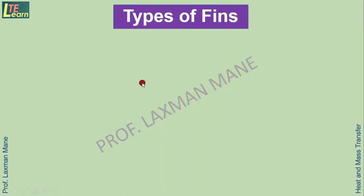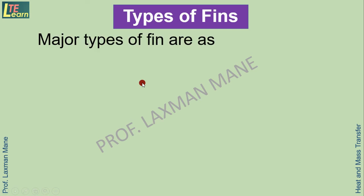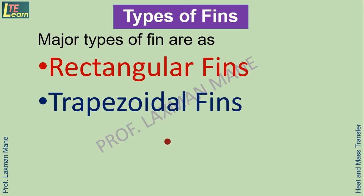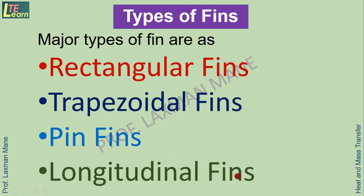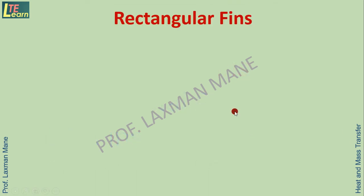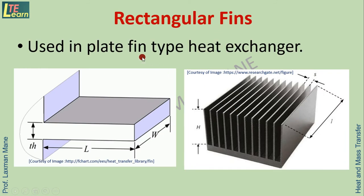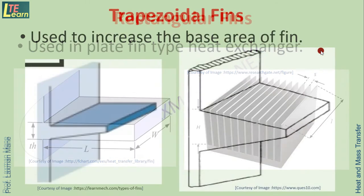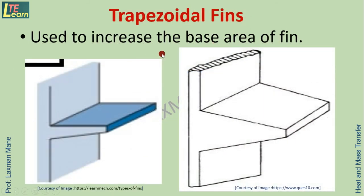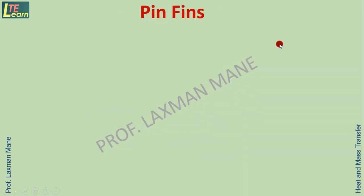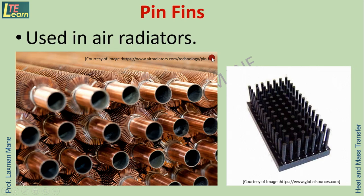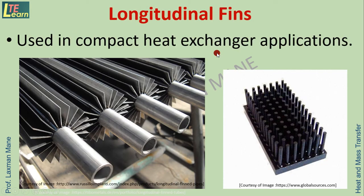Let us see the types of fins. Major types of fins are: rectangular fins, trapezoidal fins, pin fins, and longitudinal fins. Rectangular fins are used in plate-fin type heat exchangers. Trapezoidal fins are used to increase the base area of the fin. Pin fins are used in air radiators. Longitudinal fins are used in compact heat exchanger applications.